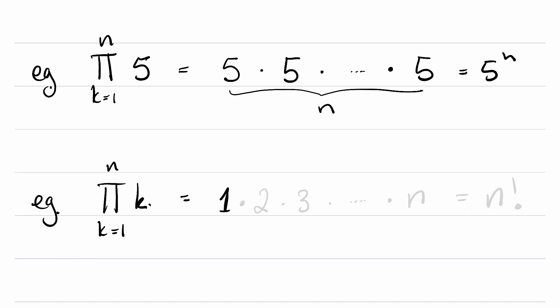We multiply that times what we get when k is equal to 2, which is 2. When k is equal to 3, 3.